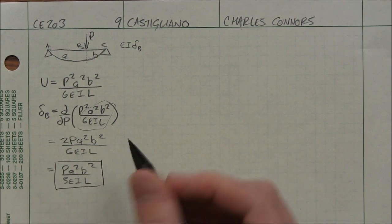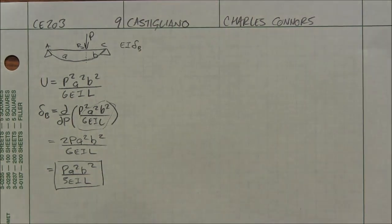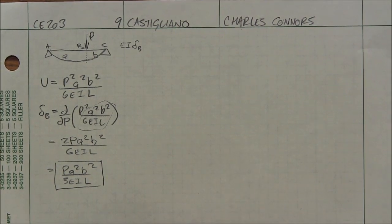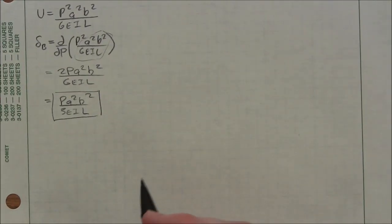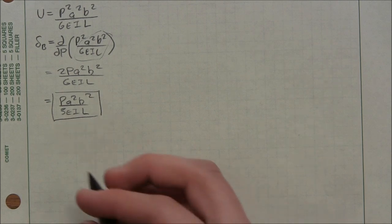It was really that simple. That's 1, 2, 3, 4 lines. Now let's try it again with the modified Castigliano's theorem just so that we can get the process down.